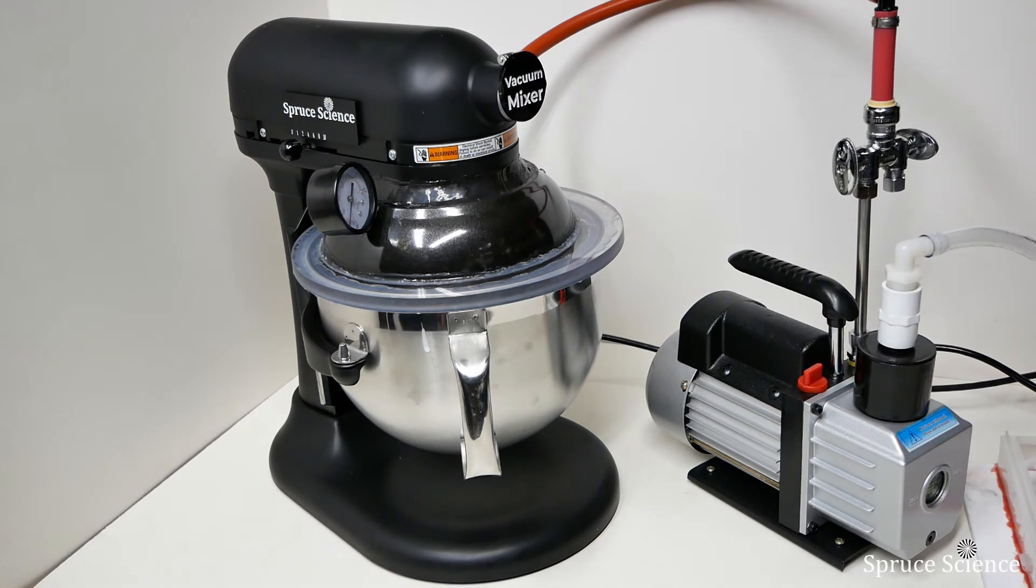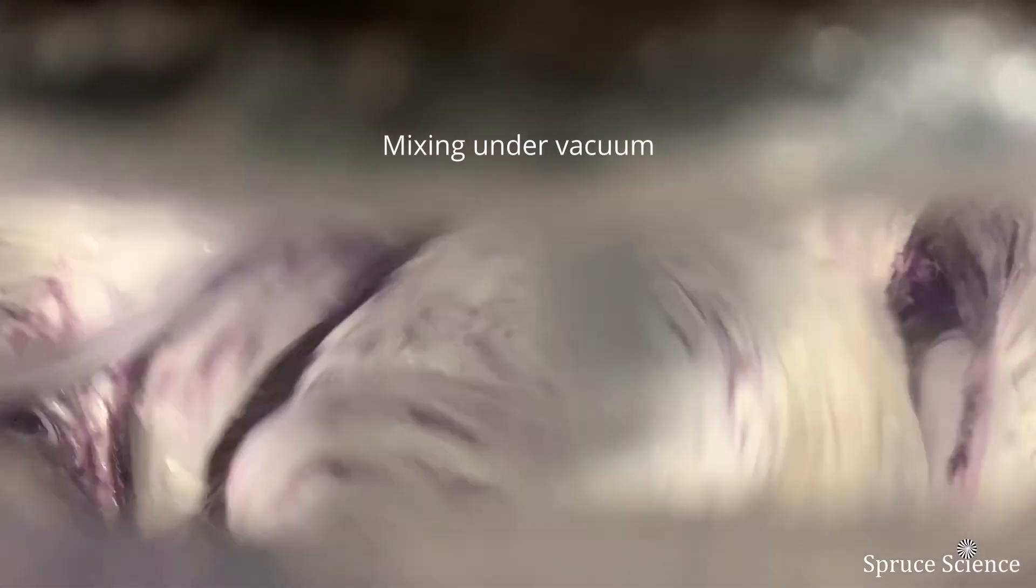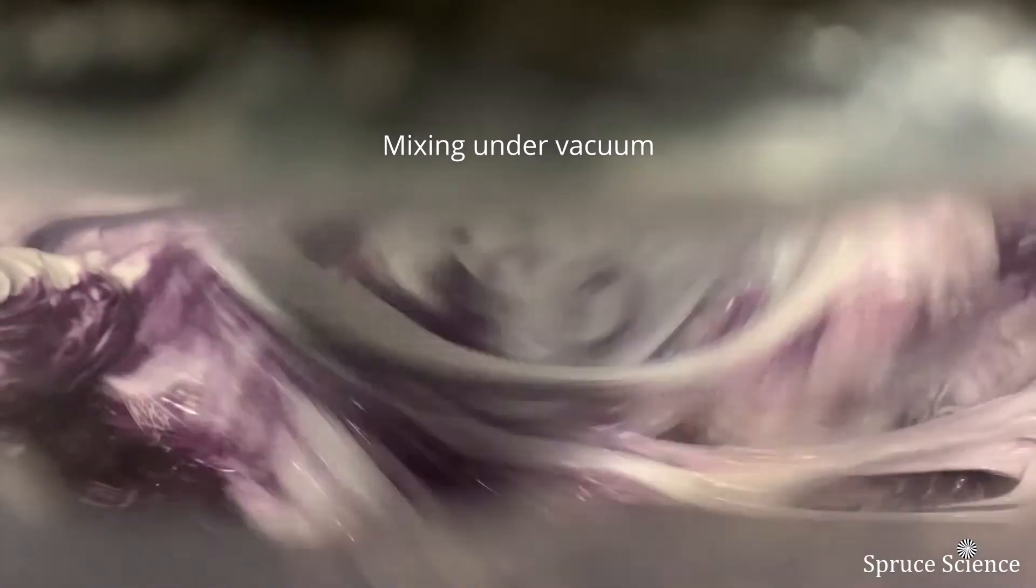The mixing bowl is pumped free of air and the mixing is carried out under low pressure in planetary motion for thorough mixing. The vacuum mixer will give you shorter processing time and increased productivity.